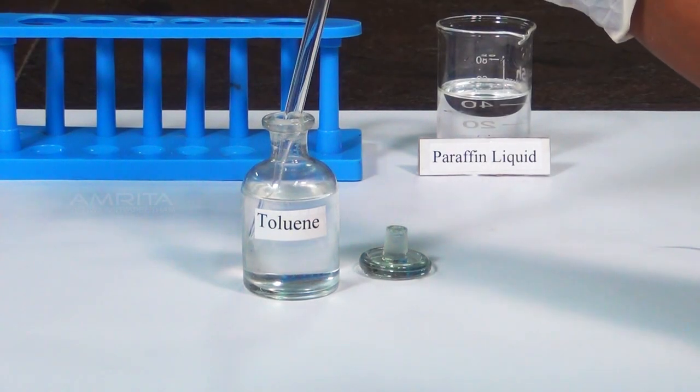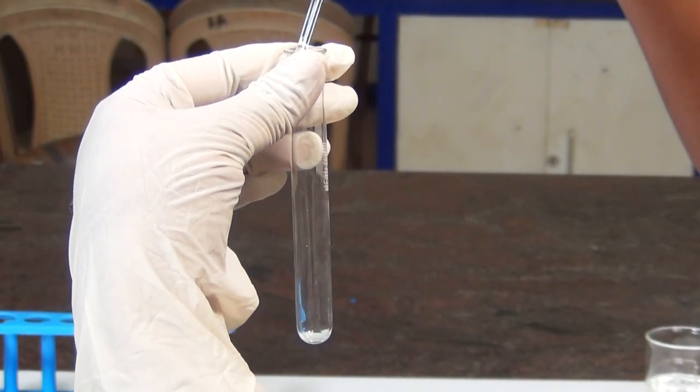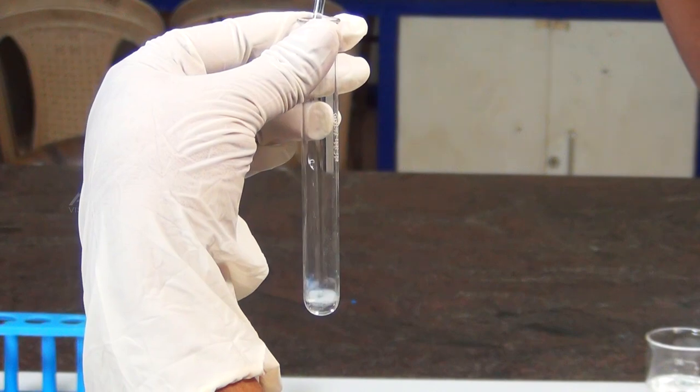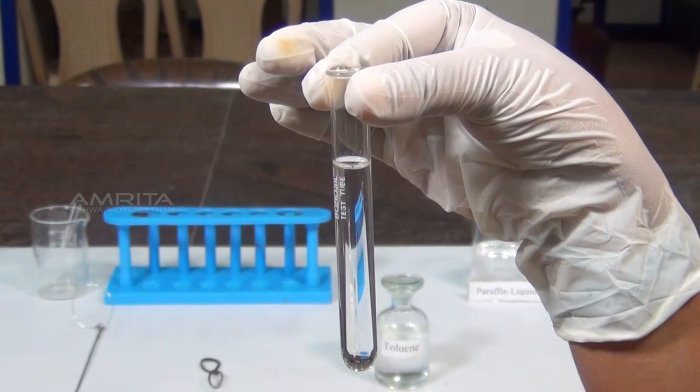Procedure. Take the small test tube and using a dropper, fill it two thirds full with the organic liquid toluene whose boiling point needs to be determined.